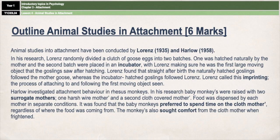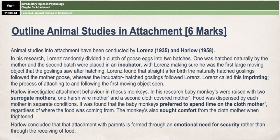Then move on to Harlow — again, procedure first, then findings. Describe the surrogate mothers and the difference between them, give two key findings: the monkeys preferred the cloth mother and sought comfort from her when frightened. You can leave out the findings about maternal deprivation as there is enough other material. Finish with a brief conclusion from Harlow's research: attachment with parents is formed through an emotional need for security rather than through the receiving of food. One conclusion is enough for a six-mark outline.